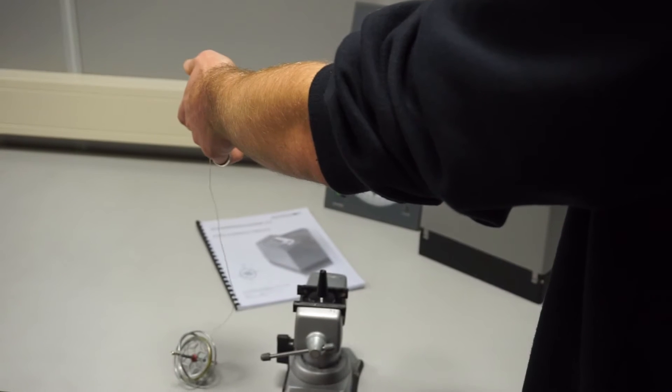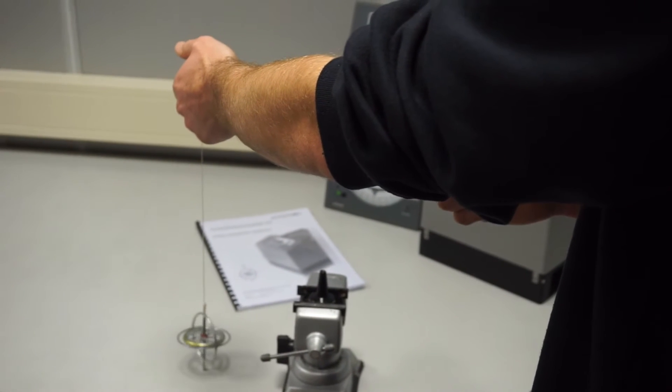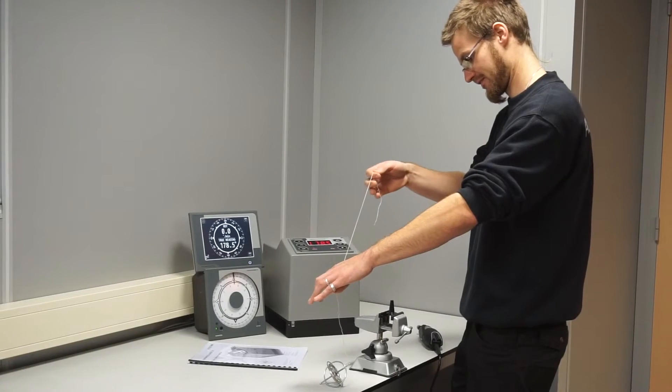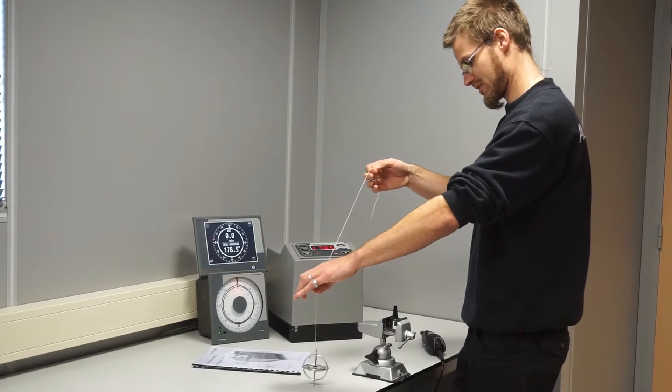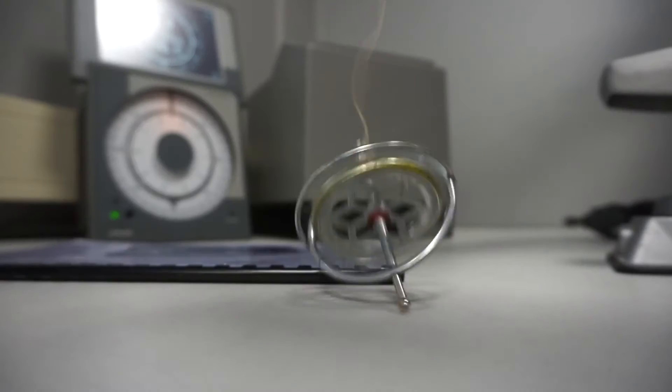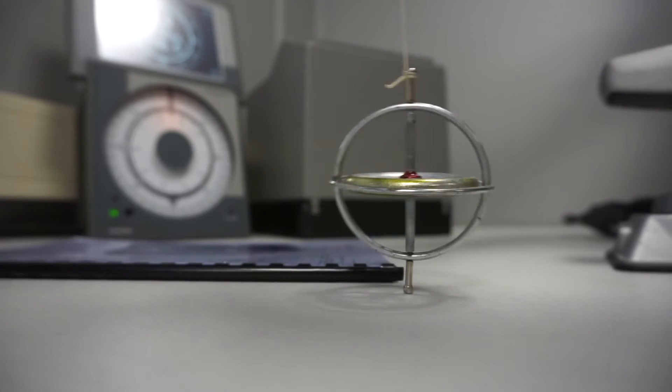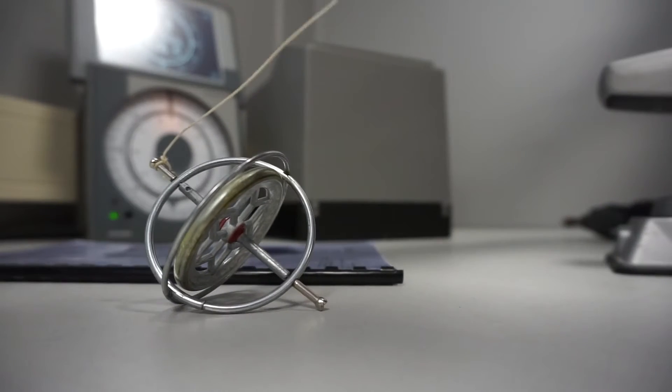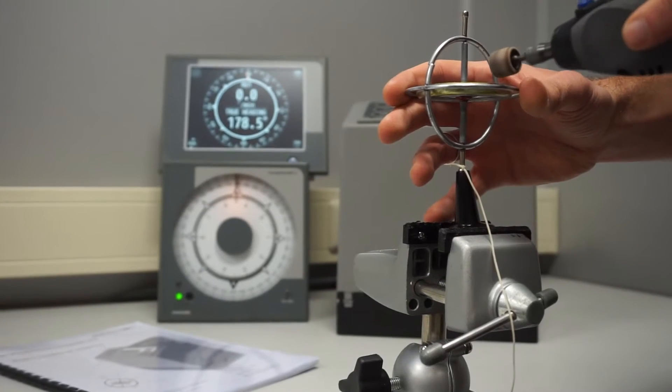I will now use my toy spinning top to demonstrate how a gyroscope operates. You all know that when I leave my spinning top like this, it will fall over immediately. However, when I make it spin fast enough, it keeps itself in balance.